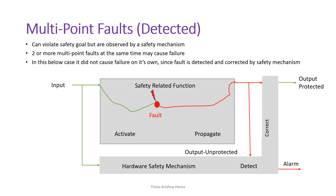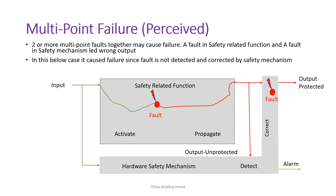For multi-point faults, the first category is detected: these can violate the safety goal but are observed and corrected by a safety mechanism. Two or more multi-point faults occurring simultaneously may cause a failure, but in this case no failure occurs on its own since the fault is detected and corrected. The second category is perceived: two or more multi-point faults together may cause failure. In this example, there is a fault in the safety-related function and a fault in the safety mechanism too, which are not corrected, leading to a wrong output.